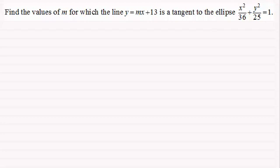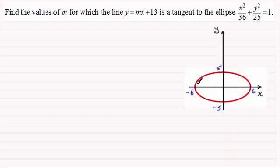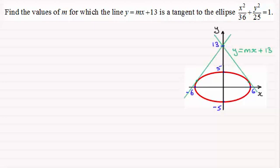The method we use — it might be easier if I just draw you a sketch. We've got our ellipse here where it crosses the x-axis at minus 6 and 6, that is the square root of 36, and the y-axis at 5 and minus 5, the square root of 25. And we've got this line y equals mx plus 13, which could look something like this dependent on the values of m. The method is always the same when handling questions like this for any curve — not just an ellipse, but circles, parabolas, and hyperbolas.